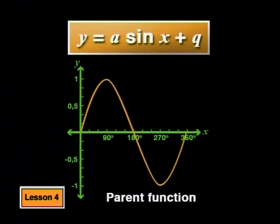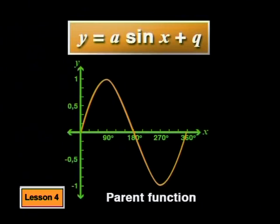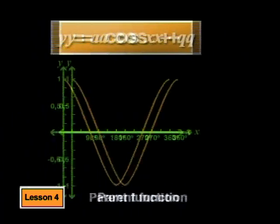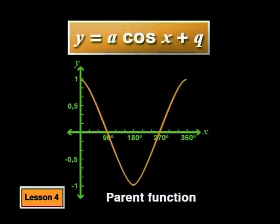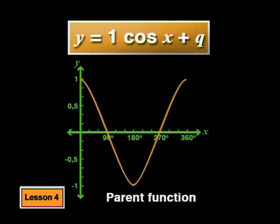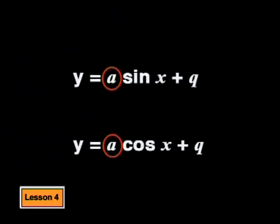Have a look at the general formula for the sine functions: y equals a·sine(x) plus q. The parent function is y equals sine(x), so it has an a value of 1 and a q value of 0. The general formula for the cosine functions is y equals a·cos(x) plus q. The parent function's formula is y equals cos(x), so it also has an a value of 1 and a q value of 0.